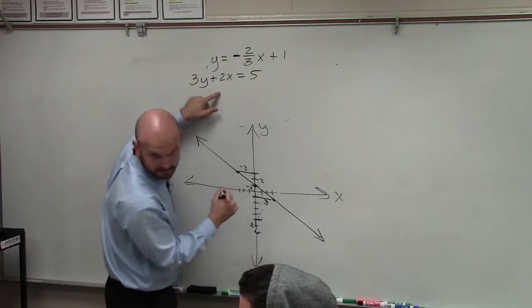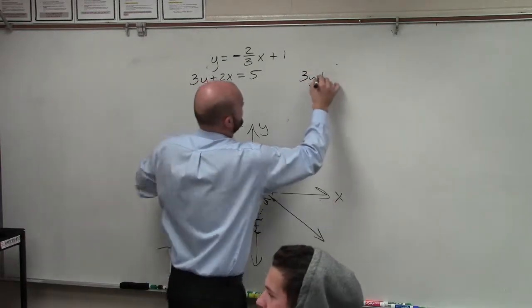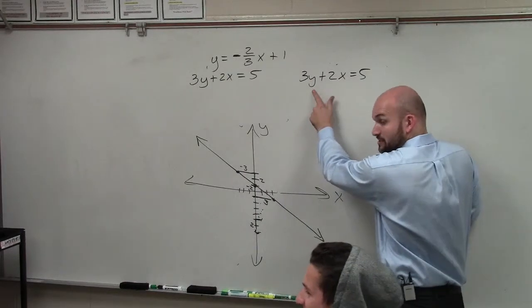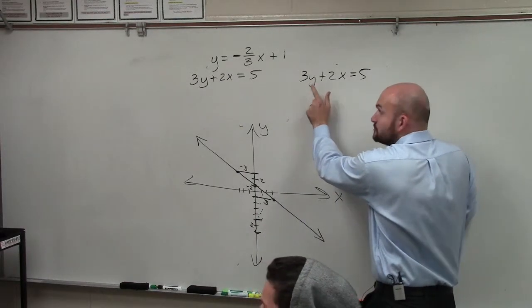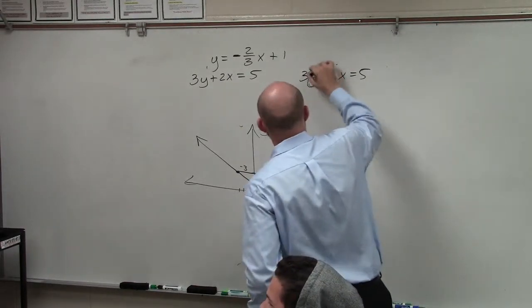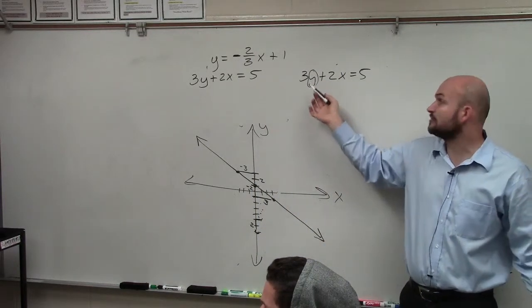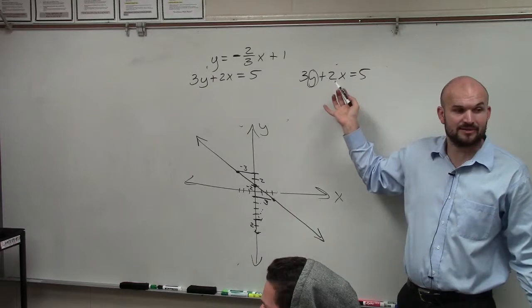So to do that, you had 3y plus 2x equals 5. Now you need to solve for y. If you guys remember, we did this in chapter one. You solve for the y. So you look at your y and say, all right, what is happening to my y variable that I can undo? Well, my variable is being multiplied by 3, and it's being added by 2x.